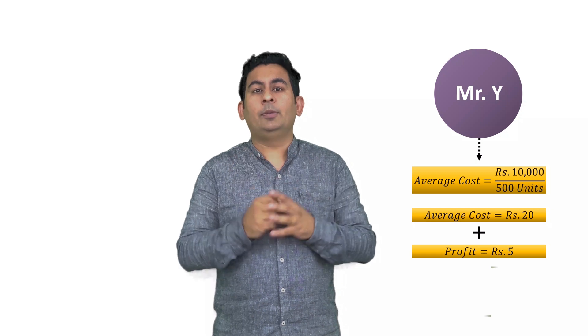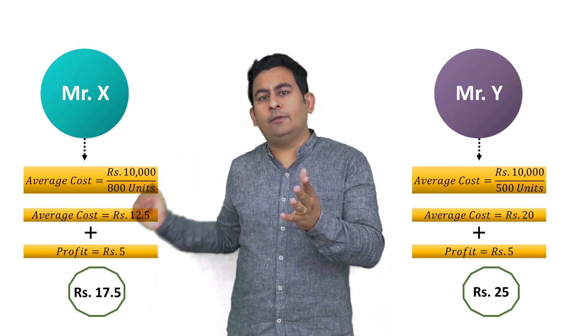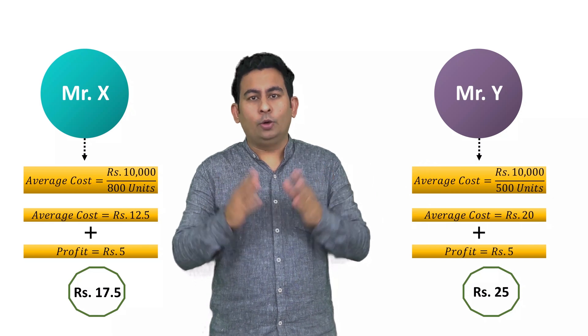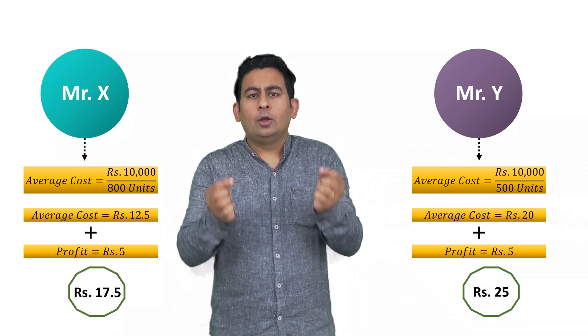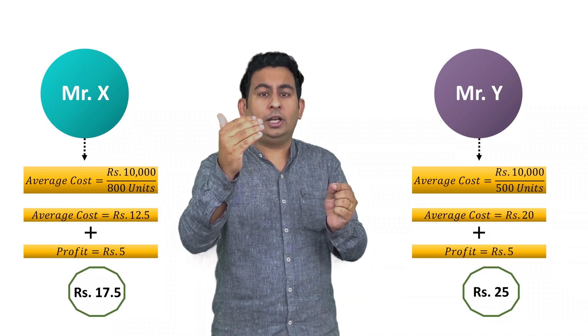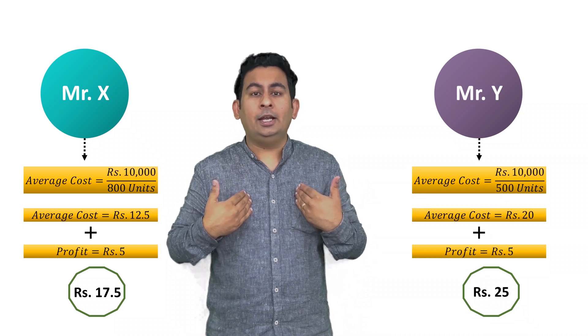Now let's think differently. What if Mr. Y absorbed the cost of processing 1000 units among his 500 units of actual output? His average cost would be 10,000 rupees divided by 500 units — 20 rupees per unit. Adding a profit of 5 rupees, his selling price would be 25 rupees. Do you think anybody will buy a product available for 17.5 from Mr. X at 25 rupees from Mr. Y? No, they won't.